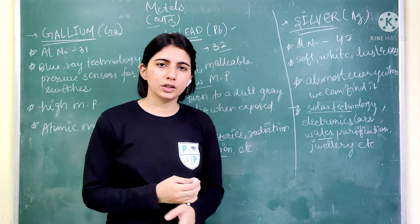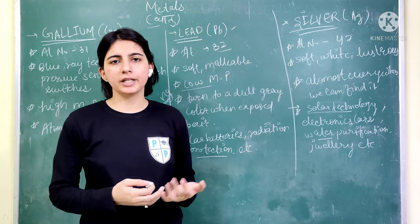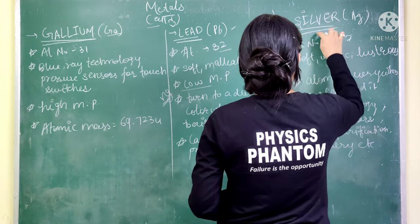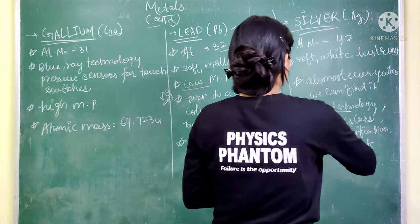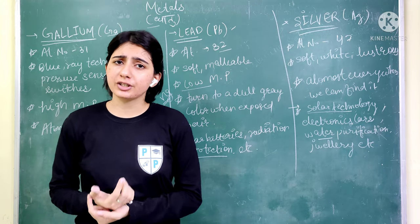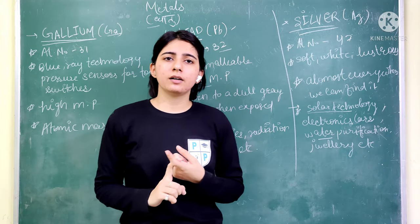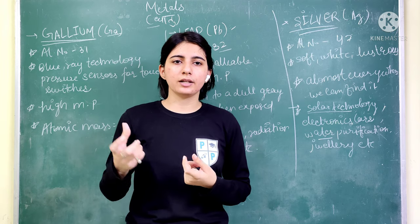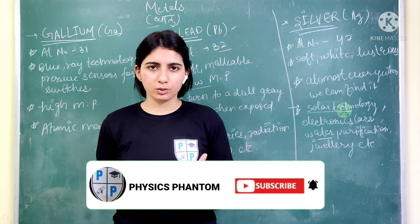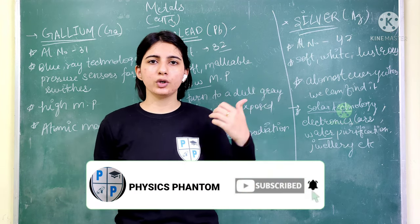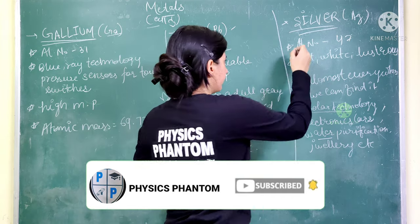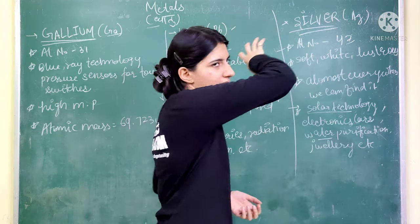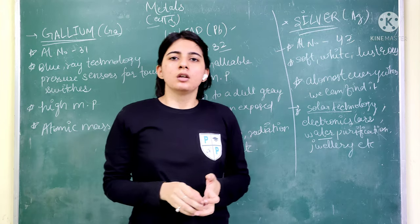One more important point is that silver is used in almost every place. The atomic number of silver is 47, and the symbol, as I have explained, is Ag.